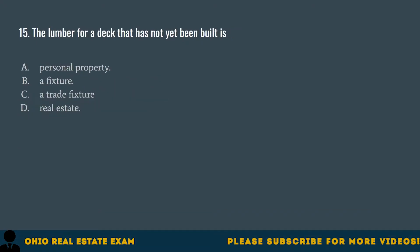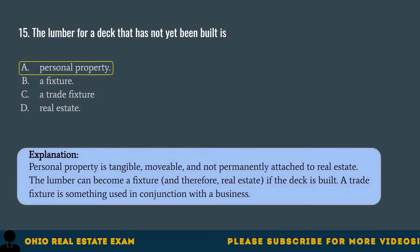Question 15. The lumber for a deck that has not yet been built is... A. Personal property. B. A fixture. C. A trade fixture. D. Real estate. The correct answer is A. Personal property. Personal property is tangible, movable, and not permanently attached to real estate. The lumber can become a fixture, and therefore real estate, if the deck is built. A trade fixture is something used in conjunction with a business.